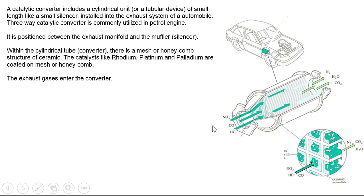The exhaust gases enter the converter. As you can see, the exhaust gases contain oxide of nitrogen, carbon monoxide and hydrocarbons, which enter the converter. When gases come out from the converter, they get converted into nitrogen, water (H2O) and carbon dioxide, which are harmless to the environment. But the incoming gases — oxide of nitrogen, carbon monoxide and unburnt hydrocarbons — are harmful. When they pass through the converter, they get converted to harmless substances.